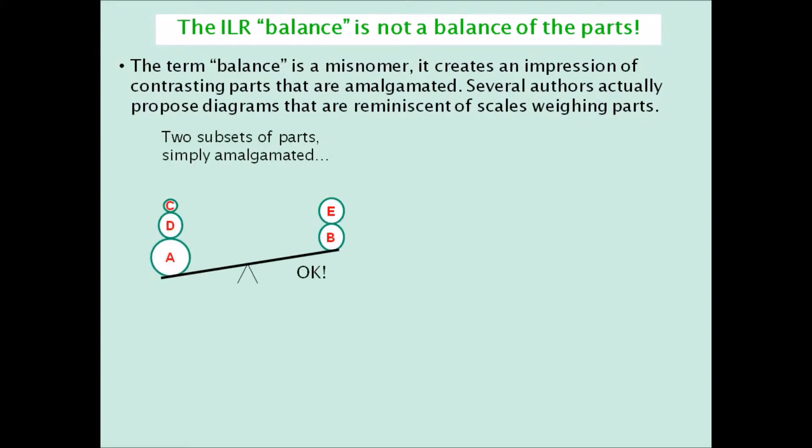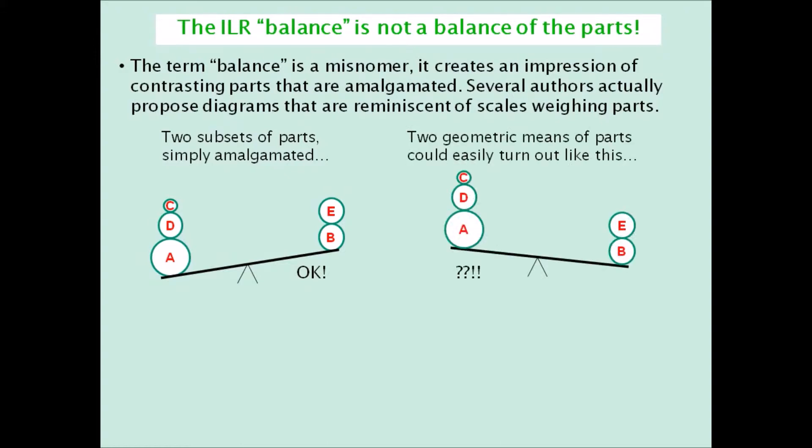Clearly, if one sums the parts, then this balancing of parts is correct. But when it comes to geometric means of parts, the situation can often turn out differently, where lower totals actually weigh more than higher ones — as in the election example given previously.